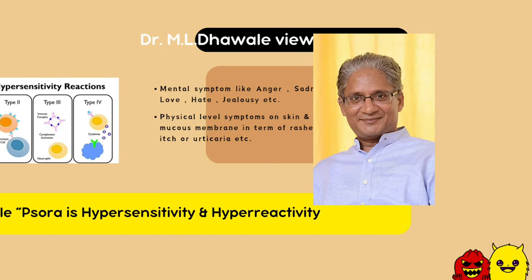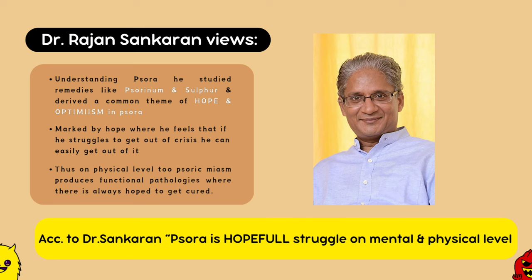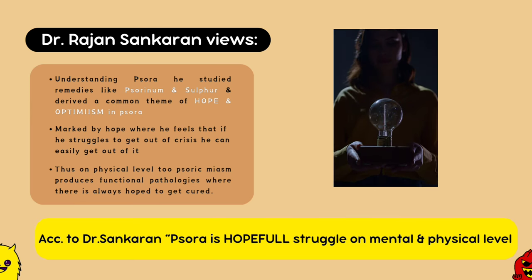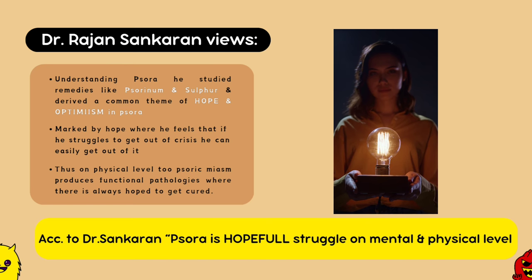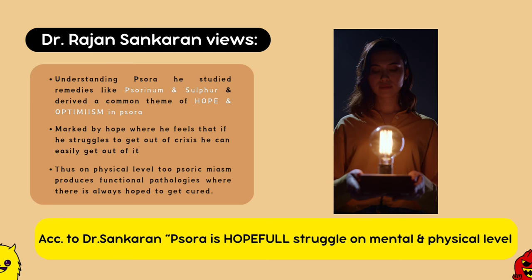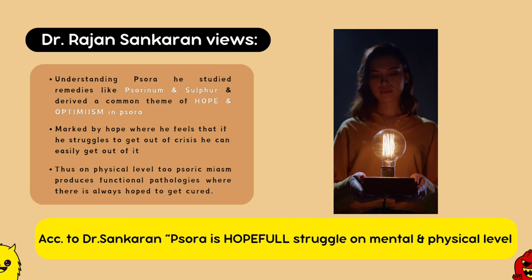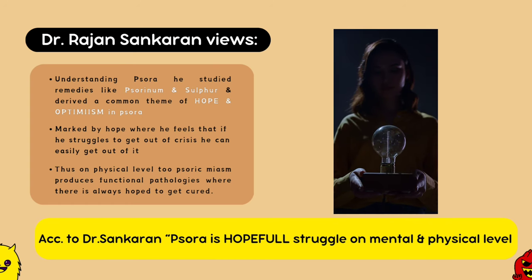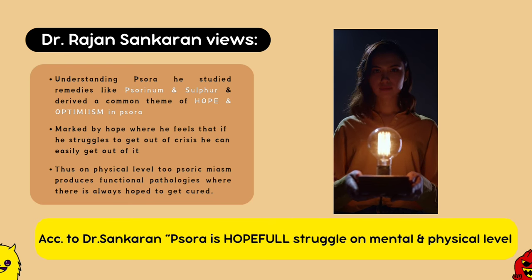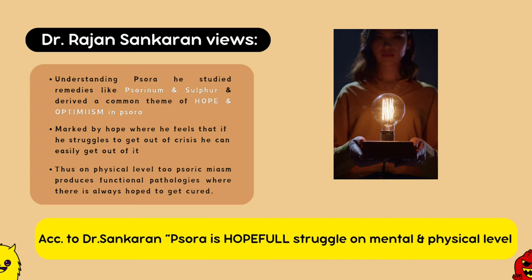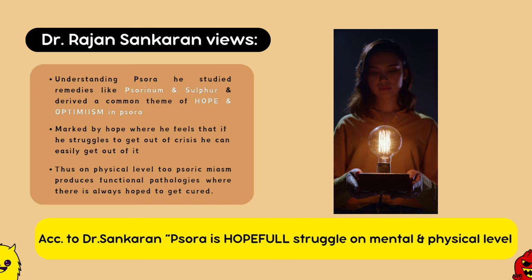After Dr. Dhawale, let's proceed to the views of Dr. Rajan Sankaran on Psoric Miasm. To study Miasms, Dr. Sankaran studied the most well-known remedies of those Miasms in terms of various mental states and delusions found in these remedies, to derive a specific theme and then extended it to the physical and pathological planes. For understanding Psora, he studied remedies like Psorinum and Sulphur and derived a common theme of hope and optimism in Psora. According to Sankaran, the Psoric mental state is marked by hope — where the patient feels that if he struggles to get out of a crisis, he can easily do so. If the struggle is successful, it is fine; if failed, it causes a lack of self-confidence or despair, but still with a lot of hope to get out of it and struggle once again. Thus, on a physical level too, Psoric Miasm produces functional pathologies where there is always a hope for cure. To sum up, according to Dr. Sankaran, Psora is a hopeful struggle on mental and physical planes.